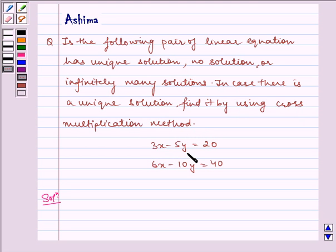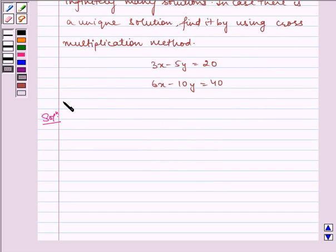We have 3x minus 5y equals 20 and 6x minus 10y equals 40. Now let us write the solution. The given equations are